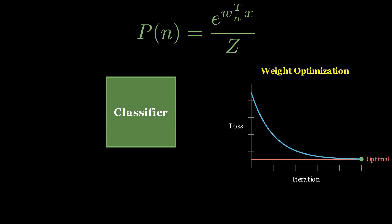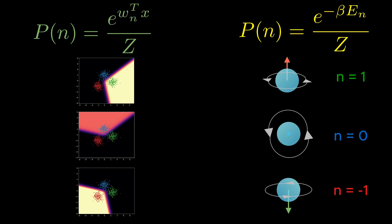So, the key takeaway is this. The softmax function in machine learning and the Boltzmann distribution in physics are mathematically identical. They describe the same structure of probabilities, only expressed in different languages.